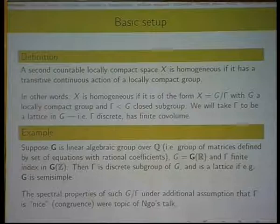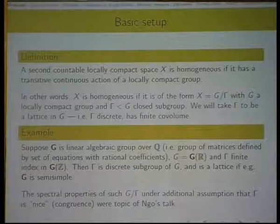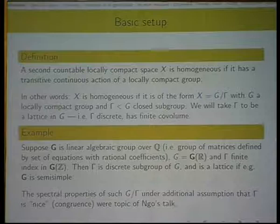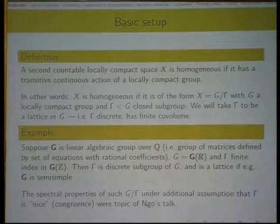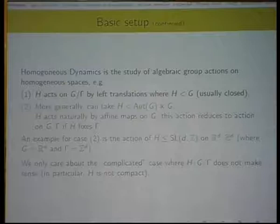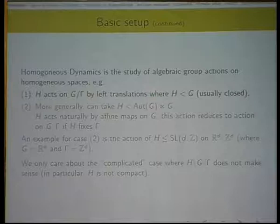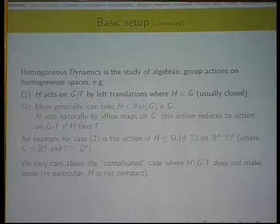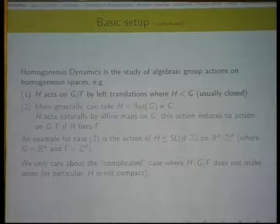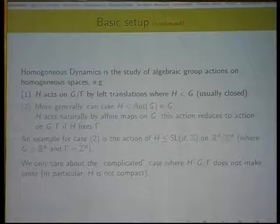This type of space actually featured in many talks, but in particular, in Ngold's talk, where he studied spectral properties of such G mod gamma, under an additional assumption that gamma is nice, congruent subgroup. That's essentially what Ngold's talk was about, even though it was stated in terms of adels. I'm not, my point of view is going to be different. I'm not going to study the spectral properties of these G mod gamma, but the dynamical properties or how I would study certain natural group actions on homogeneous spaces. That's the subject of homogeneous dynamics. Of course, if you study the same space from two different viewpoints, you have some interactions between dynamical approach and the spectral theory.